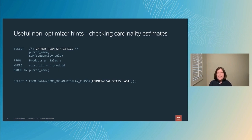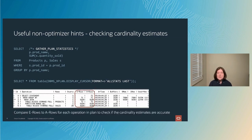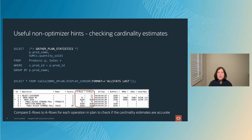If I add the GATHER_PLAN_STATISTICS hint to a SQL statement, I'm asking Oracle to capture execution statistics for that SQL statement and store them in the cursor cache inside the shared pool. I can then view those stats as part of the execution plan by adding the format parameter 'allstats last' to my DBMS_XPLAN.DISPLAY_CURSOR command. That adds additional columns to the execution plan table, including the E rows and A rows columns.